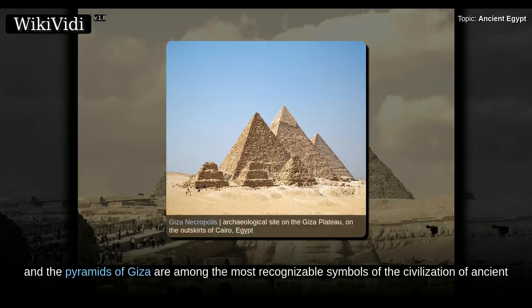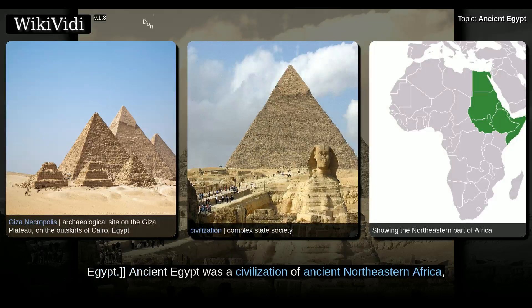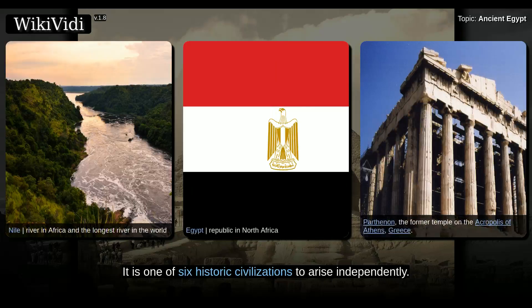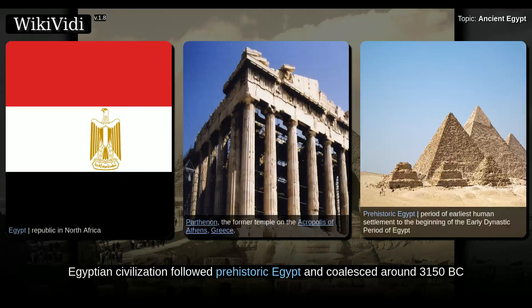Ancient Egypt and the Pyramids of Giza are among the most recognizable symbols of the civilization of ancient Egypt. Ancient Egypt was a civilization of ancient northeastern Africa, concentrated along the lower reaches of the Nile River in the place that is now the country Egypt. It is one of six historic civilizations to arise independently.